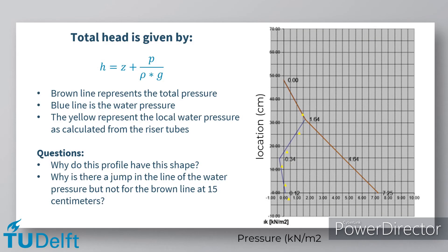Another typical plot is here shown on the right. The y-axis represents the vertical location within the sand and water column. The x-axis represents the pressure in kN per square meter. The brown line represents the total pressure distribution throughout the column. This starts at the top of the water column. The blue line is the water pressure, and the yellow points represent the local water pressure as calculated from the riser tubes.